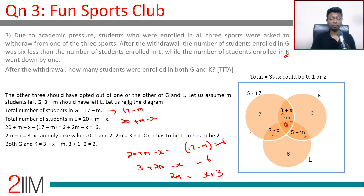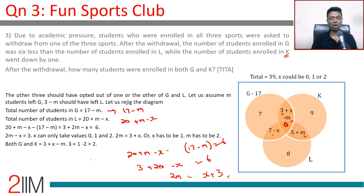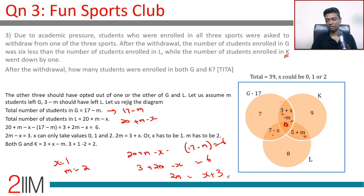Since 2m must be even, x plus 3 must be even, meaning x must be odd. From our earlier finding that x can only be 0, 1, or 2, the only odd value is x equals 1. Then 2m equals 4, so m equals 2. The number of students enrolled in both G and K after withdrawal is the G∩K region: 3 plus x minus m equals 3 plus 1 minus 2 equals 2.